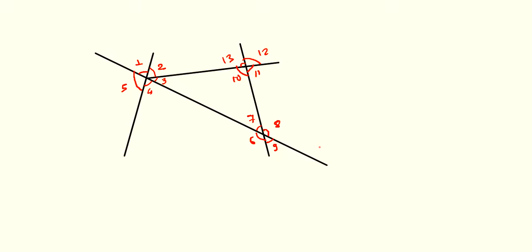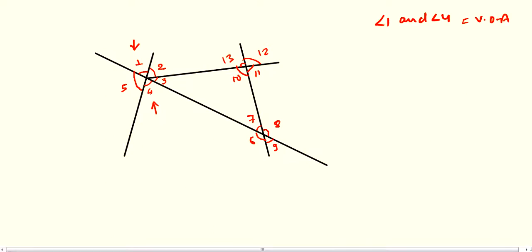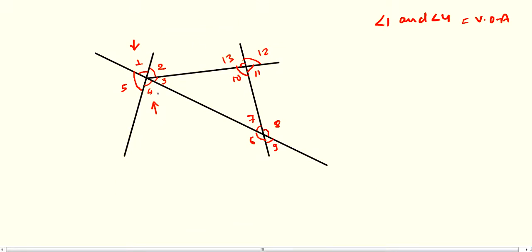Exercise 14b, question number two. The first part asks about angle 1 and angle 4. Angle 1 is here and angle 4 is here — these two angles are said to be vertically opposite angles. The second part asks about angle 4 and angle 7. This is angle 4 and this is angle 7. These are vertically opposite angles.